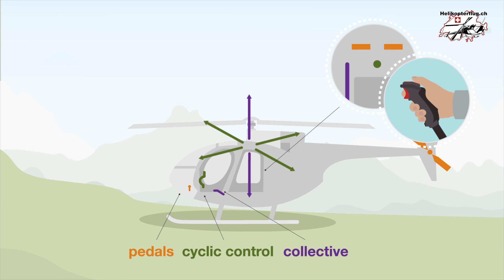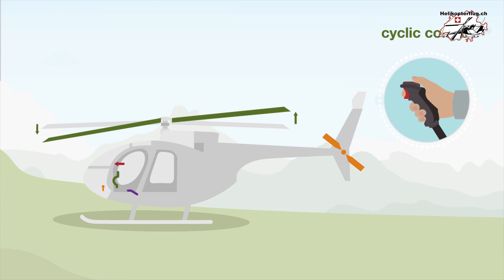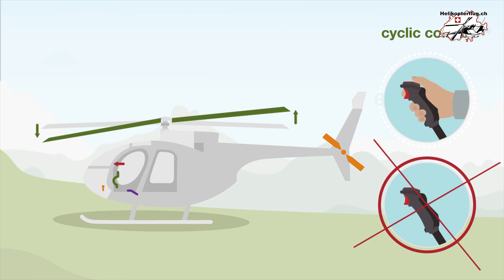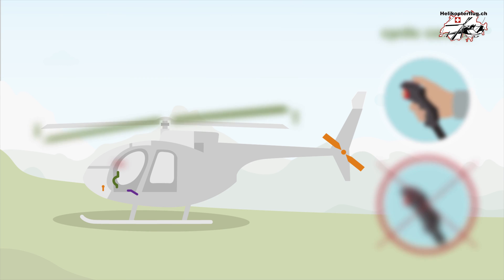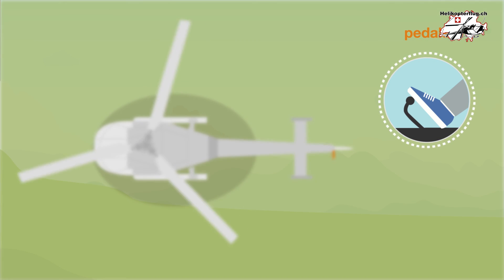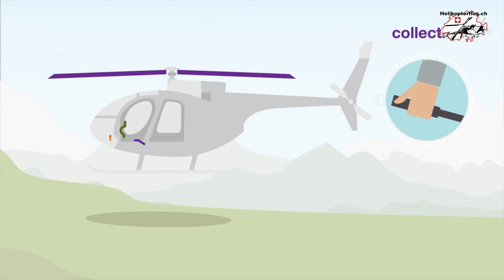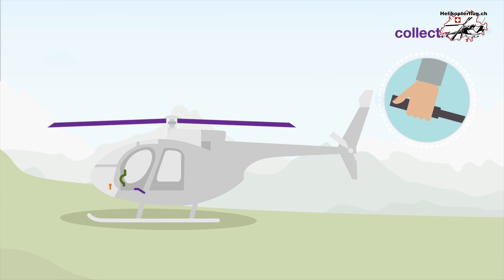Three different flight controls are used to control helicopters. The joystick, also known as the cyclic control, is operated with the right hand and serves to move the helicopter to the left, right, forwards or backwards. Pilots must not let go of the cyclic control at any time during flight. Pilots use the foot pedals to control the tail rotor, which allows the helicopter to rotate around its vertical axis. The collective control is operated with the left hand and pilots use it to influence the climb and descent of the helicopter.